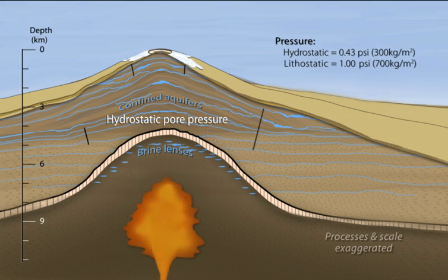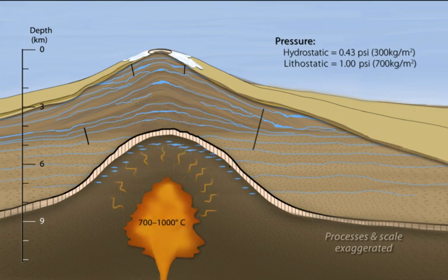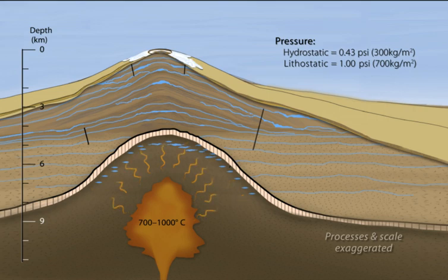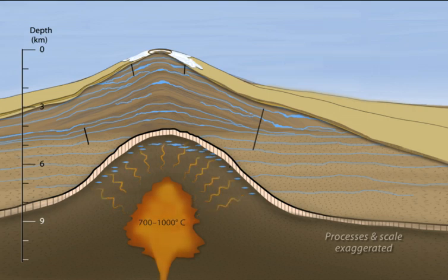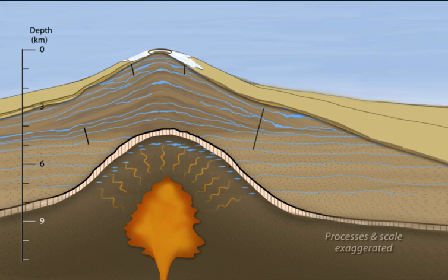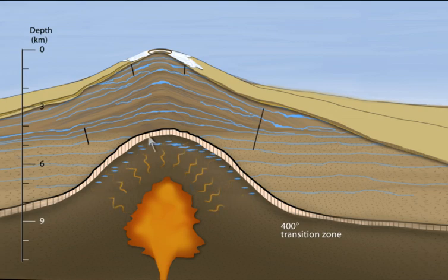Along volcanic arcs, magma from previous eruptive episodes cools to 700 to 1000 degrees Celsius and slowly crystallizes at roughly 6 to 12 kilometers depth. Heat from this magma conducts through the surrounding rock, enlarging the plastic zone. The two zones are separated by a transition of contrasting permeability that prevents concentrated magmatic fluids from escaping upward out of the plastic zone.